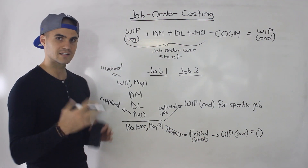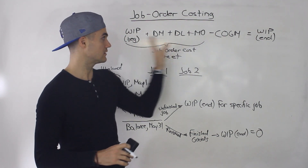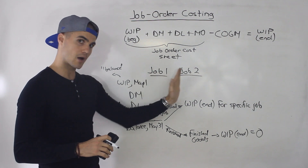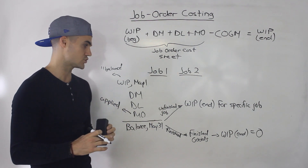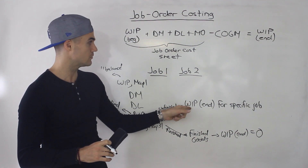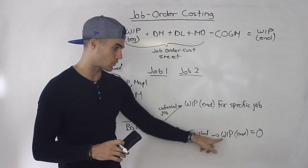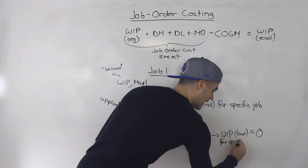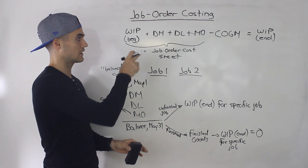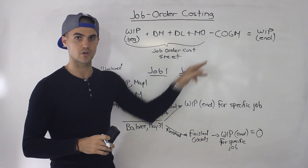So that's the difference when looking at job order costing versus the firm as a whole — that's the biggest difference in this flow. You can't transfer out a portion of a job. Either the balance stays as work in process for that specific job, which becomes the beginning balance for the next period, or the job is finished, it goes to finished goods, and the work in process for that specific job at the end is zero.